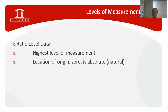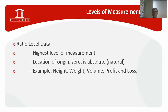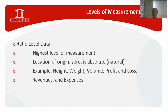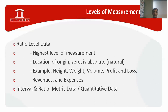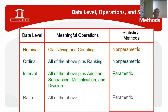The limitation of interval data — the arbitrary zero — is removed in the highest level of measurement: ratio. In ratio data, the location of origin or zero is absolute, meaning a natural zero. Examples include height, where we always measure from a natural zero; weight, where we always calculate from zero; volume; profit or loss a company incurs each year; revenue; and expenses. Interval and ratio data are generally called metric or quantitative data because they are measured in numbers. This is a summary of all four levels: nominal, ordinal, interval, and ratio.